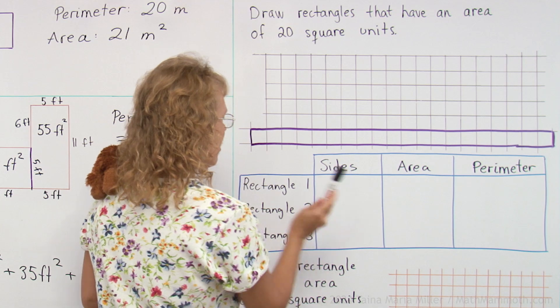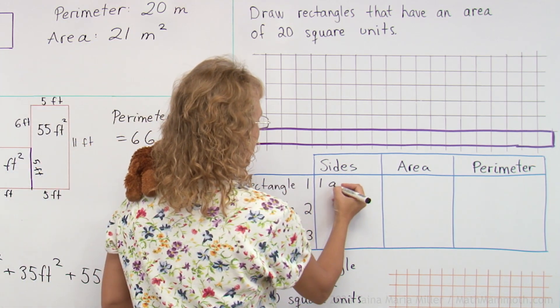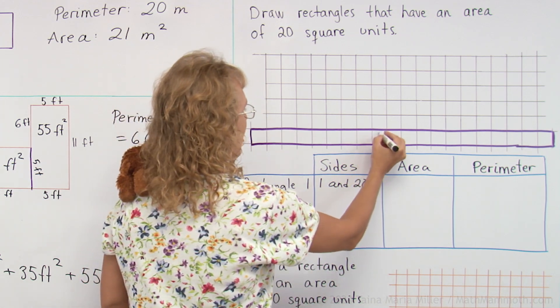And I'm going to record here the side lengths of my rectangle. It has side lengths of 1 and 20. This is my rectangle number 1.